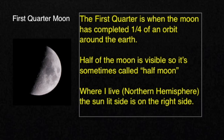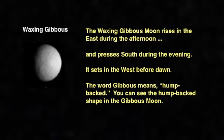After first quarter, the moon continues to grow in size and we call this waxing gibbous. A waxing gibbous moon rises in the east during the afternoon and presses south in the evening. It sets in the west just before dawn. The word gibbous means humpbacked — you can see the humpbacked shape in the gibbous moon.